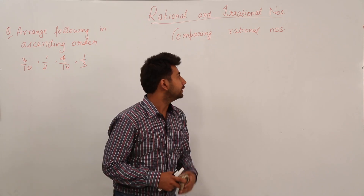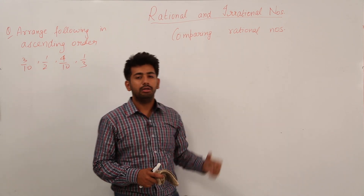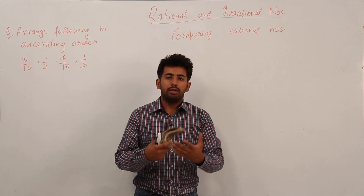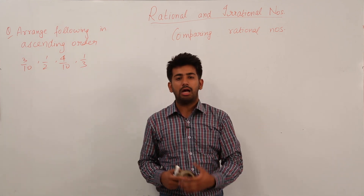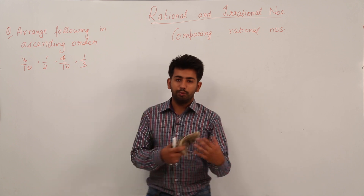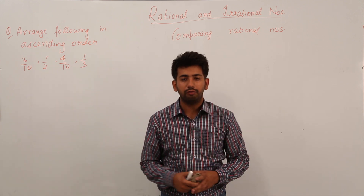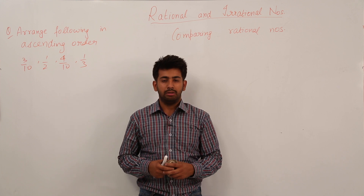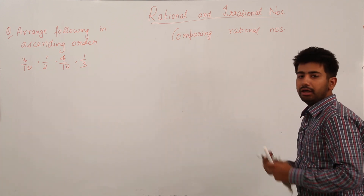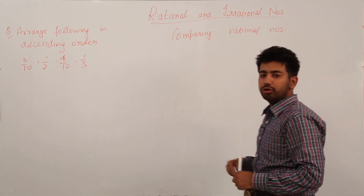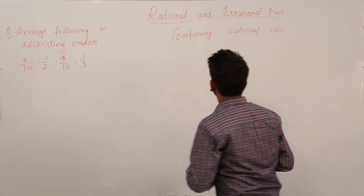In this particular section, we have to compare two rational numbers. By comparison I mean: which one is greater out of two, which one is lesser, or whether both of them are equal. Now let us understand how do we actually compare two rational numbers.